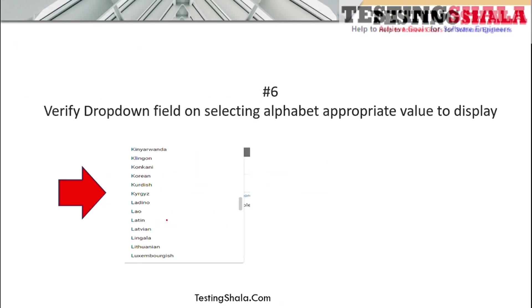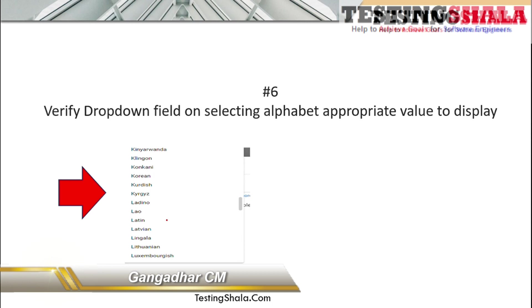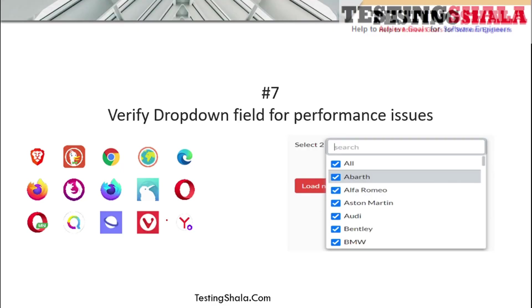Another scenario to write is sorting. Most dropdowns are sorted in alphabetical order, so when you click on a certain alphabet key — for example, if you select G, any word starting with G should appear first. If you select Z, all data related to Z should display. You should test this to ensure sorting works as expected.